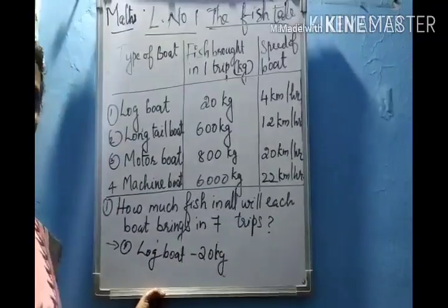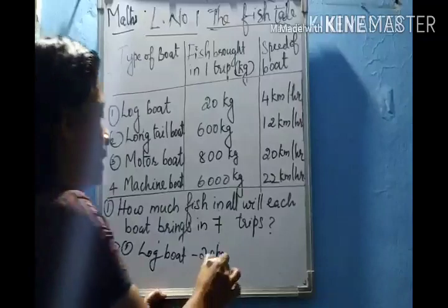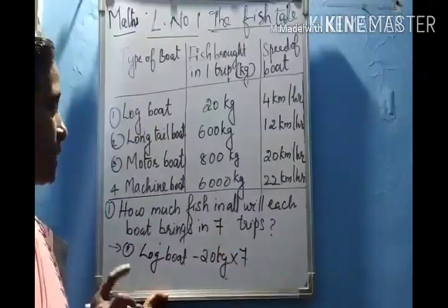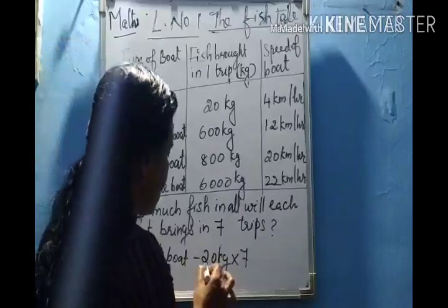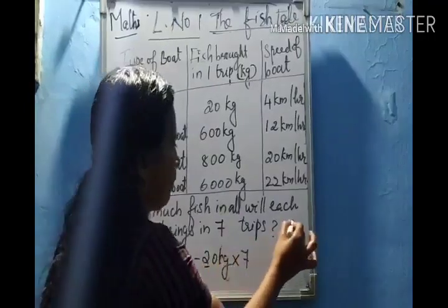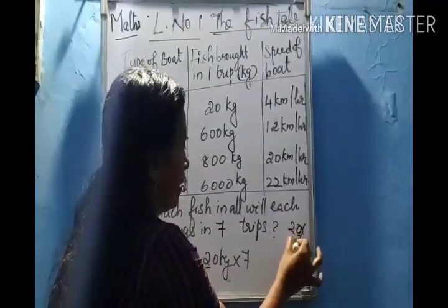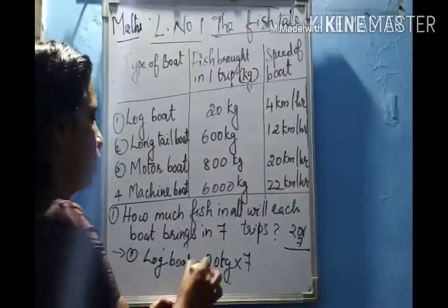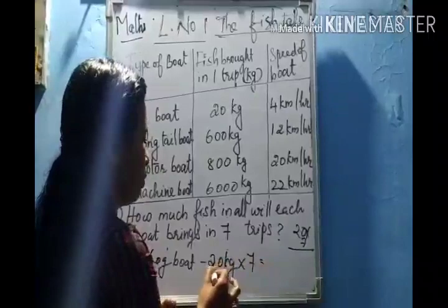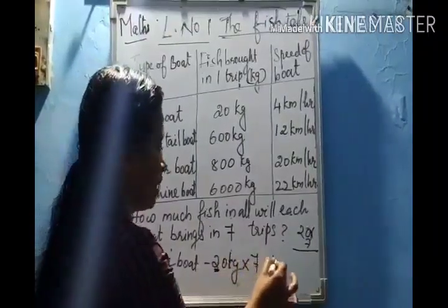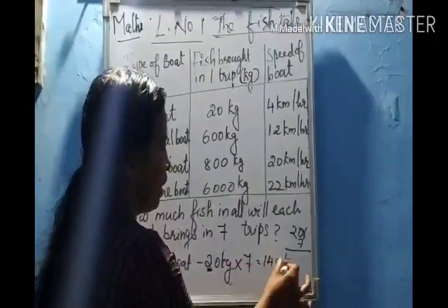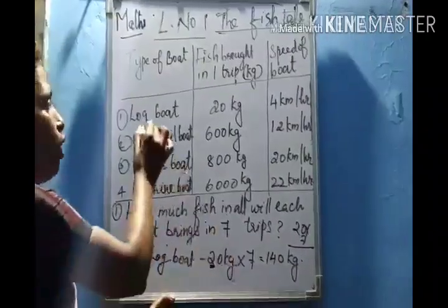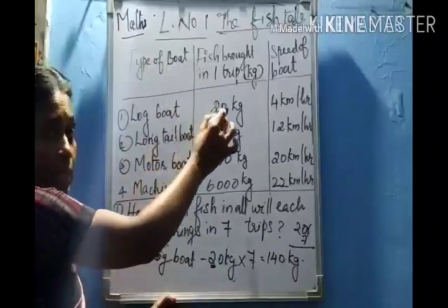How much fish does it bring in seven trips? We will multiply the quantity of fish brought in one trip by seven. I will show you the easy method of multiplication — instead of multiplying twenty into seven directly, two sevens are fourteen, and we also add the zero. So two hundred and forty kilograms of fish will be brought by the log board in seven trips.